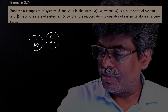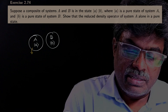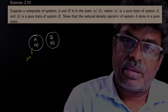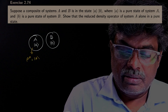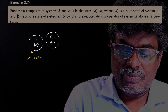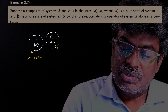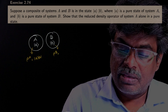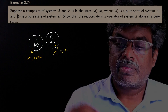Then what we can write — the density operator corresponding to A is nothing but the outer product |A⟩⟨A|, and the density operator corresponding to B is nothing but the outer product |B⟩⟨B|.